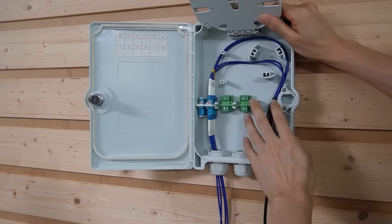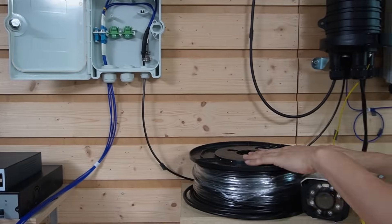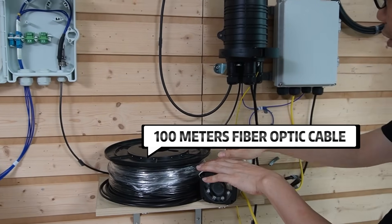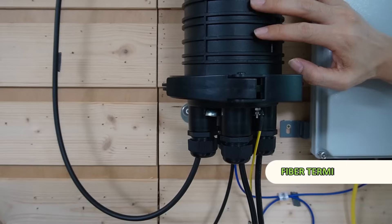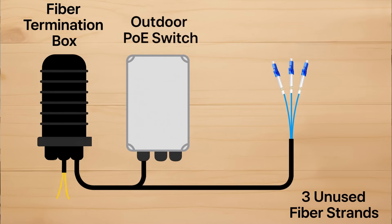I don't need to build the connector in the field. Here's a 100-meter fiber optic cable with four strands connecting to this terminal box. It distributes one strand to this outdoor PoE switch and sends the other three unused strands to the next location.